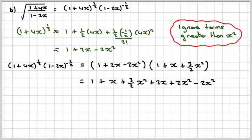That's great, because these two terms now cancel out. So we're going to get 1x plus 2x, which is 3x plus 3/2 x squared.